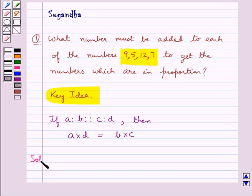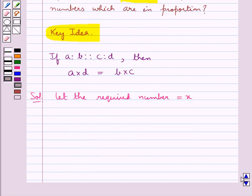Let's move on to the solution now. Let the required number be X. We add X to each of the numbers 9, 5,